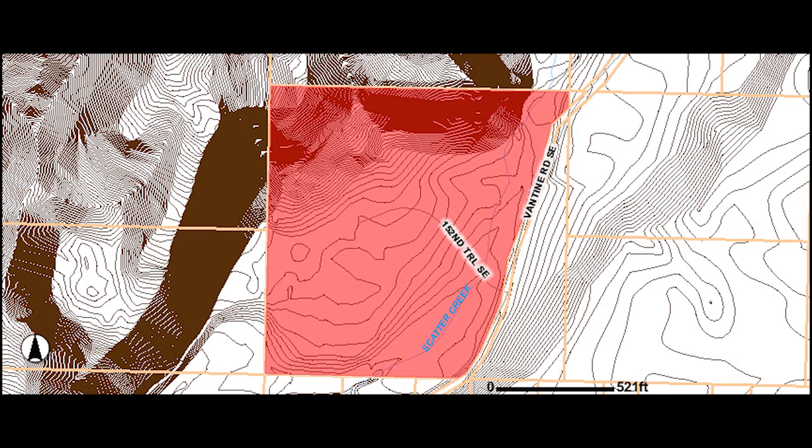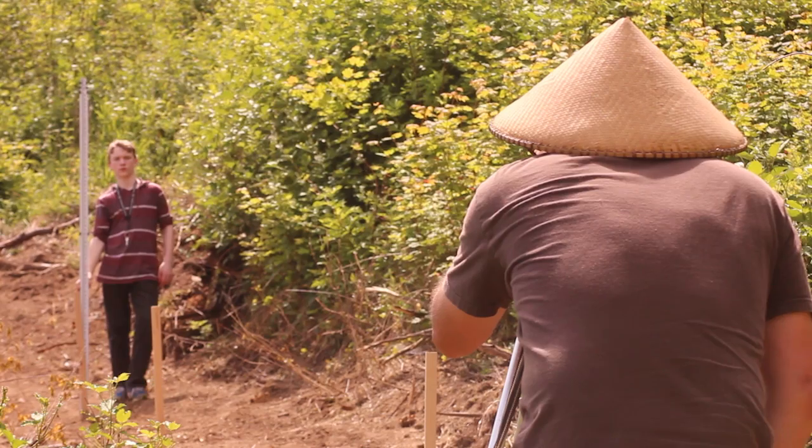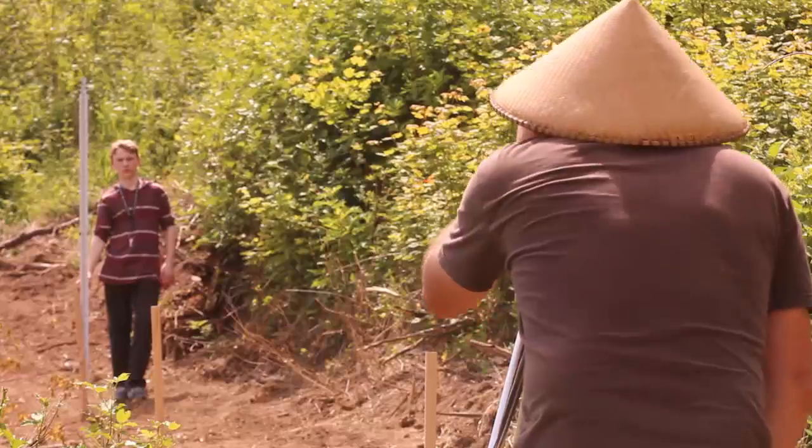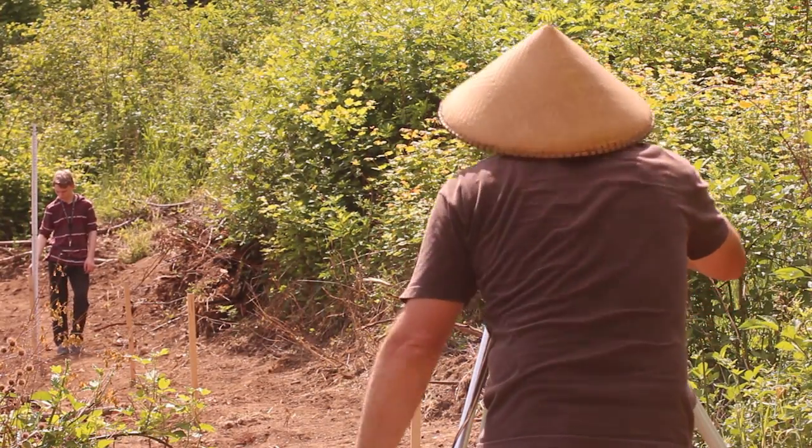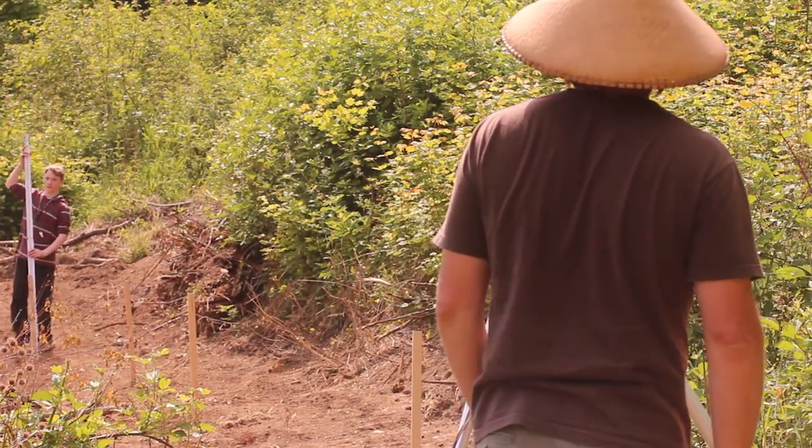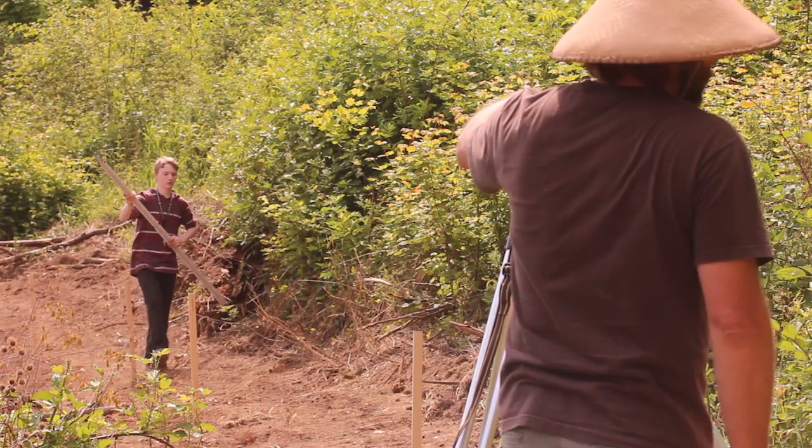We started with a map of the contours on the land from the county. We laid the swale out on contour with a transit. You can also use a laser, making the bottom of the swale level across the landscape. Water flows down the slope and is collected in the swale. Slow it, spread it, sink it is the mantra.